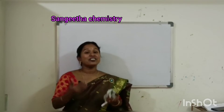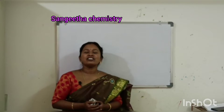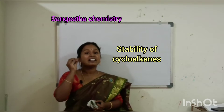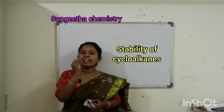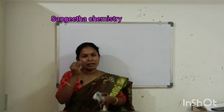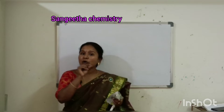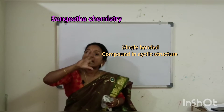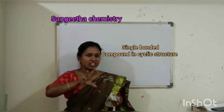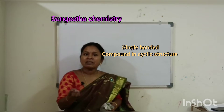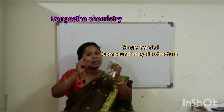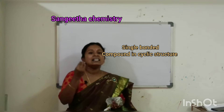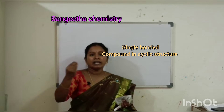Hello students, in today's class we are going to discuss about stability of cycloalkanes. Cycloalkanes are single bonded carbons, but they will be in a cyclic structure. So cycloalkanes — it is an alkane, but it will be in a cyclic ring.